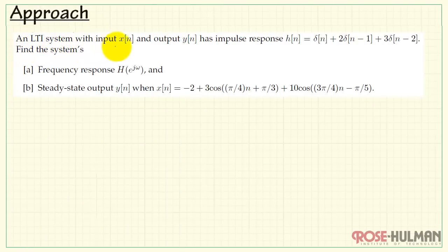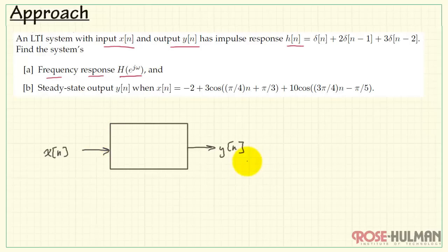Here we have a linear time invariant system with an input x, an output y, and an impulse response h of n. We are looking first for the frequency response h of e to the j omega. Let's picture the system. The system has frequency response h of e to the j omega with an input x and an output y.